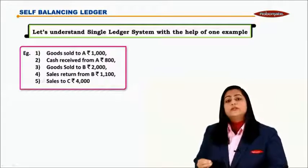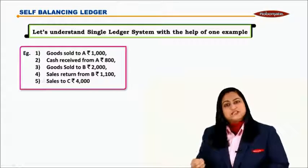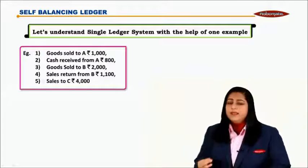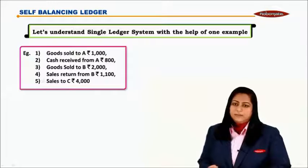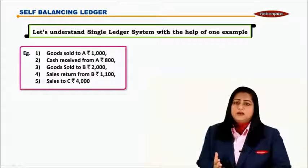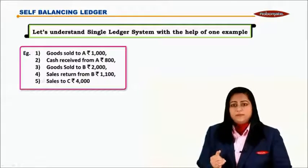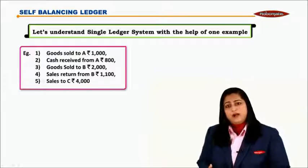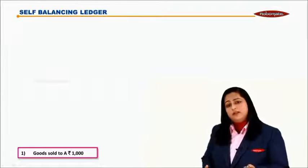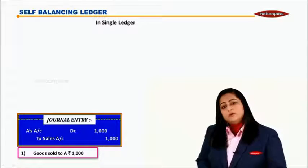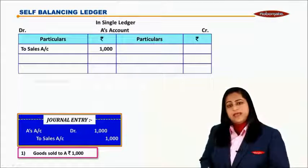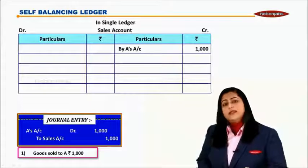The five transactions are: goods are sold to A, cash is received from A, goods are sold to B, there is a sales return from B, and goods are sold to C. Let us see the postings one by one. When we sell goods to A, the journal entry is A's account debit to sales account. This will appear in A's account on the debit side and in sales account on the credit side.